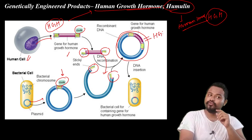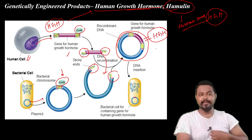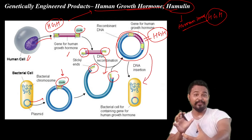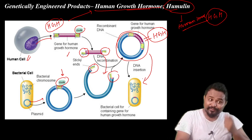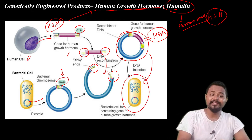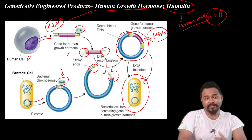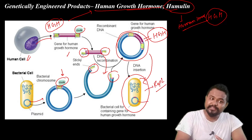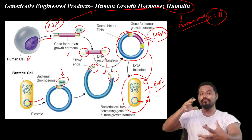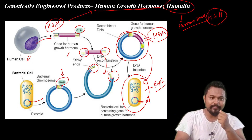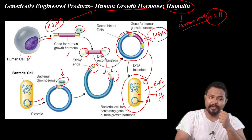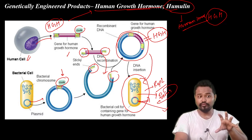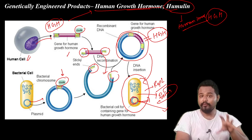You mix them to create recombinant DNA. This recombinant DNA contains the human growth hormone gene inserted into the bacterial plasmid. The bacteria then express the human growth hormone.